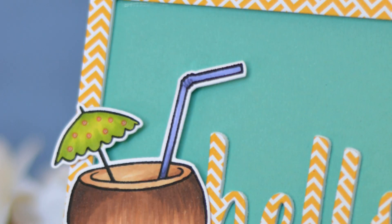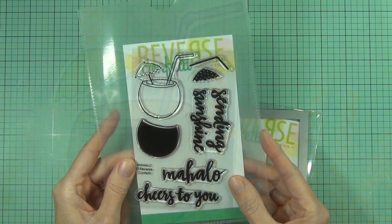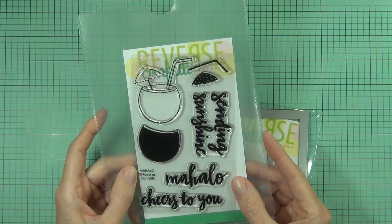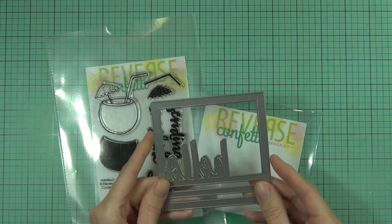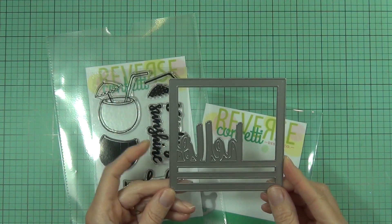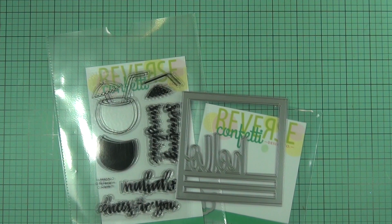Hi, it's Theresa from Lost in Paper and I'm so excited to be part of the Reverse Confetti July 2017 release hop. I have the Mahalo stamp set, matching dies, and also this Hello Square die which is really awesome. This is going to be my main focus of my card today.